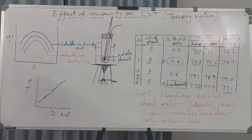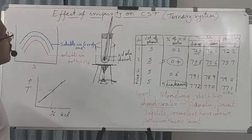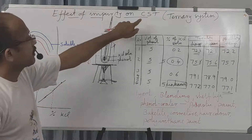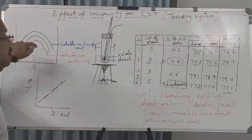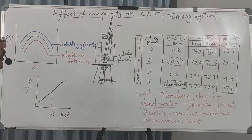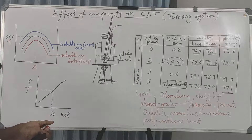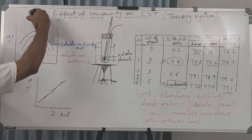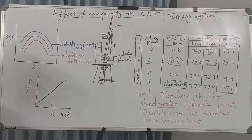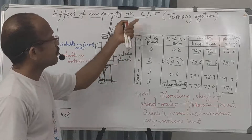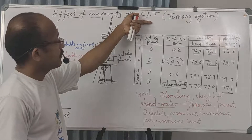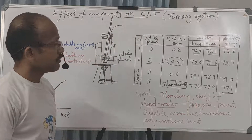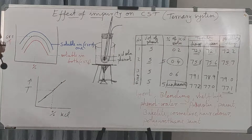The use of this impurity effect is that CST is a highly sensitive value. Adding impurities causes the CST value to shift either higher or lower, and this experiment has many practical applications.